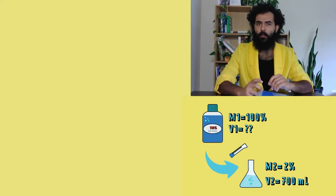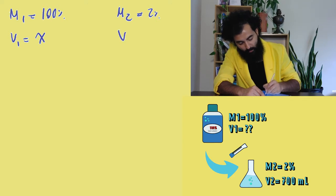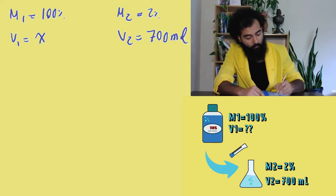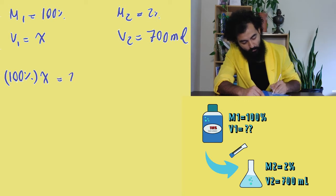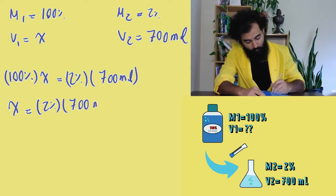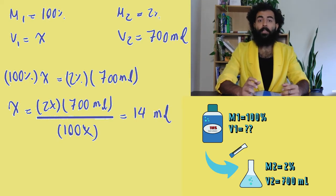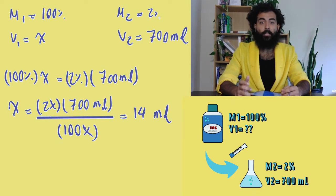So, how do we know how much of the stock solution we need? We know that M1 equals 100%, M2 equals 2%, V1 equals X, and V2 equals 700 ml. Now, we can just set up the problem. So, 100% times X equals 2% times 700 ml. And with some basic algebra, we can just solve for X. Now, we know that they used 14 ml of the stock solution to create the desired solution.